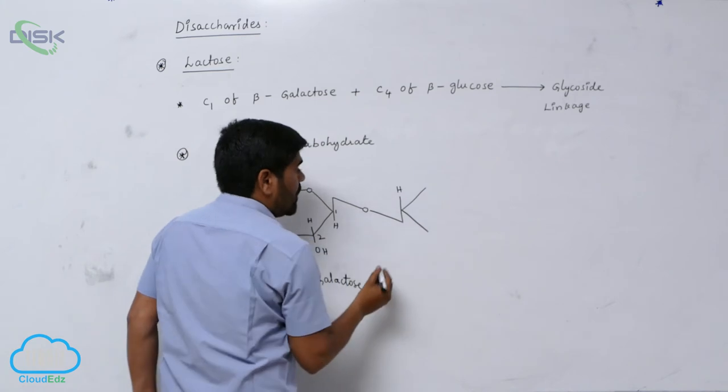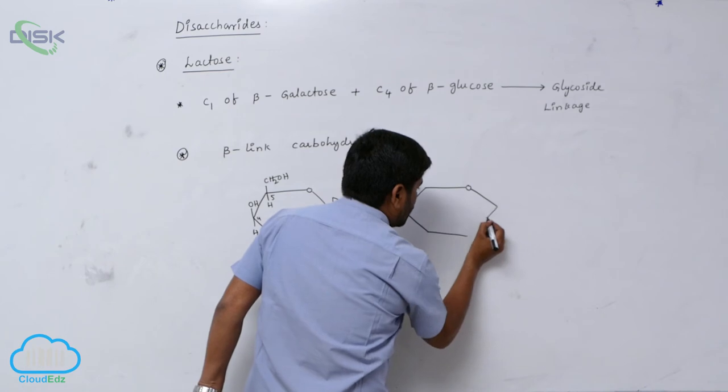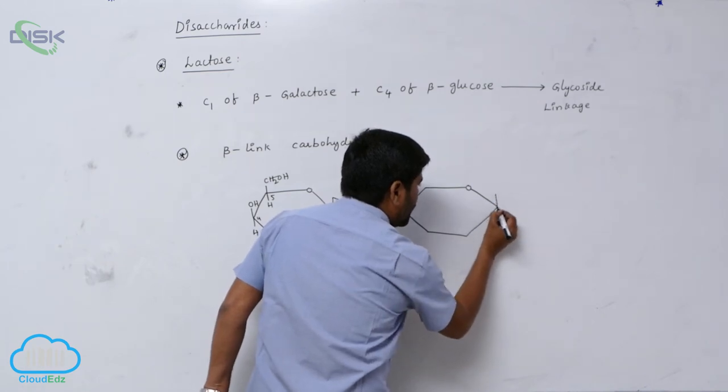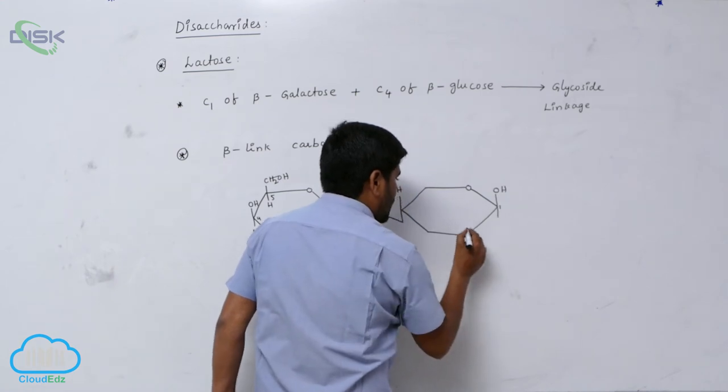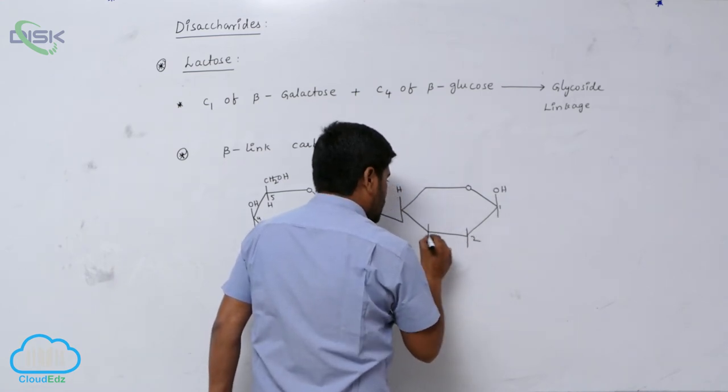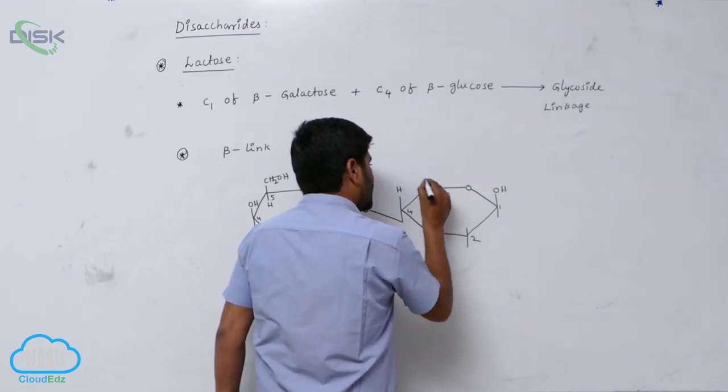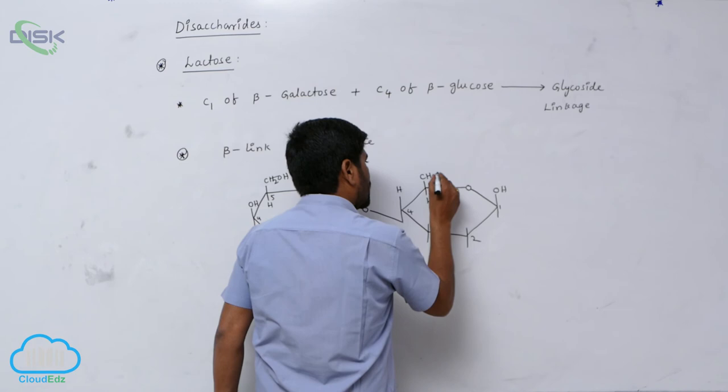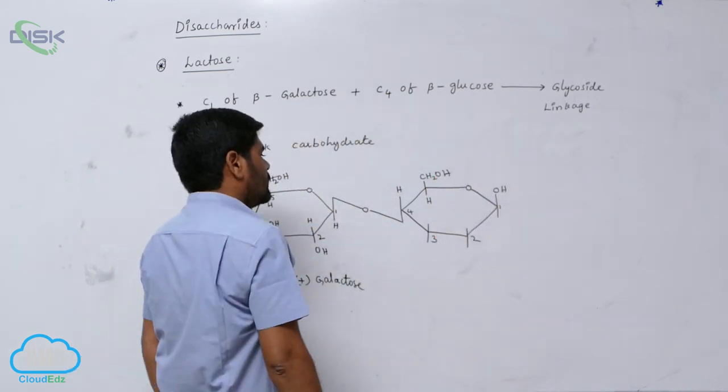Which carbon linkage? C4 carbon of beta-glucose. Beta means OH is which direction? Above. This is the first carbon, second carbon, third carbon, fourth hydrogen. CH2OH, CH2OH, CH2OH.